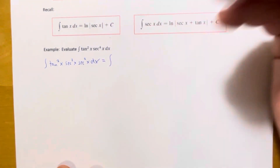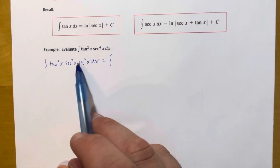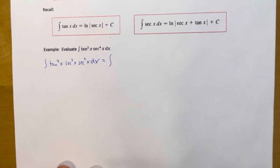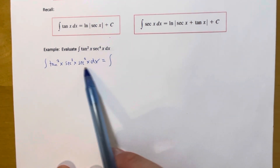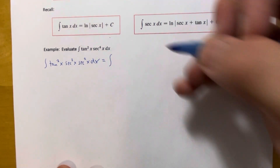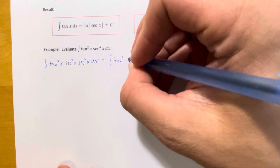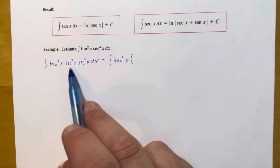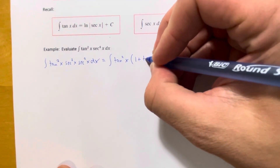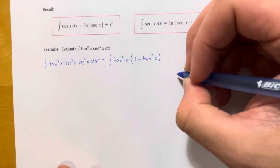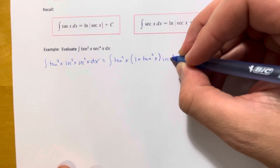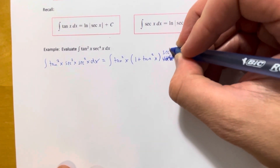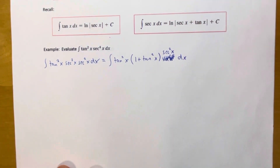We want to express everything else in terms of tangent, because that lets us set u equal to tangent of x so that secant squared dx automatically becomes du. We leave tangent squared of x alone, and replace the other secant squared using the identity: secant squared of x equals 1 plus tangent squared of x, keeping that last secant squared of x dx.